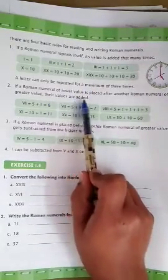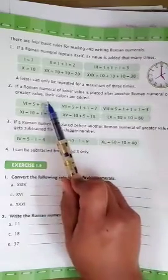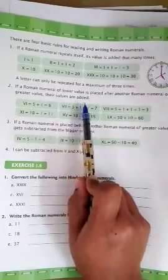The second one is, if Roman numerals of lower value is placed after another Roman numerals of greater value, their values are added.